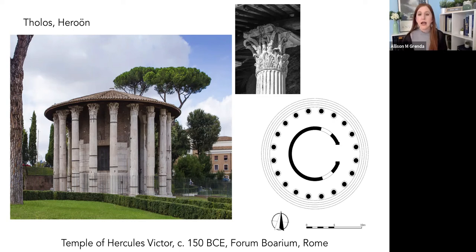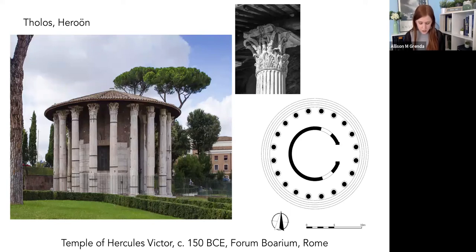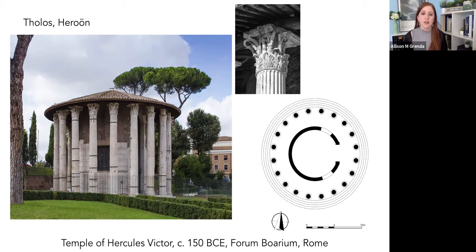Another thing is that it is Corinthian — the capitals on the columns are of the Corinthian order. As you might guess from the name, Corinthian originated in Corinth, and this temple was built from the spoils of the sack of Corinth — so it makes sense they would reference that. This is one of the earliest uses of Corinthian columns in Rome, and Corinthian will become their preferred order of temples. We'll see a lot of Corinthian as we move on. It's also built from travertine — again that reference to Greek marble temples — and it would have been covered in white stucco.